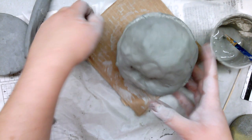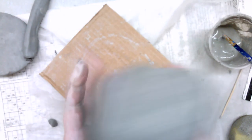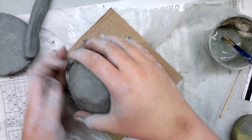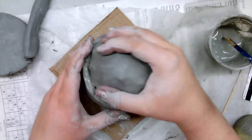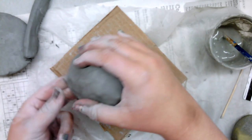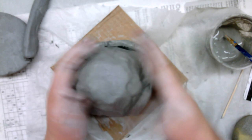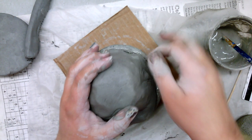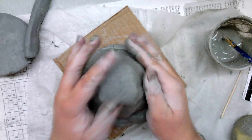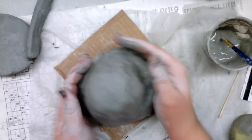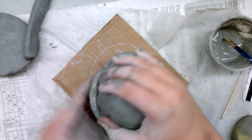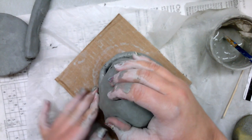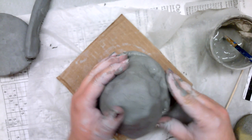I'm actually going to flip this over because I want to make sure that my pinch pot is actually touching where it needs to for the score and slip. I'm just going to shape these two things together.